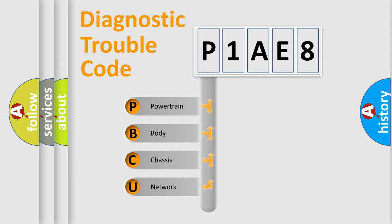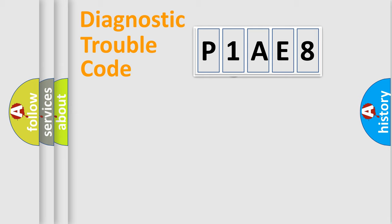We divide the electric system of automobile into four basic units: Powertrain, Body, Chassis, and Network. This distribution is defined in the first character code.